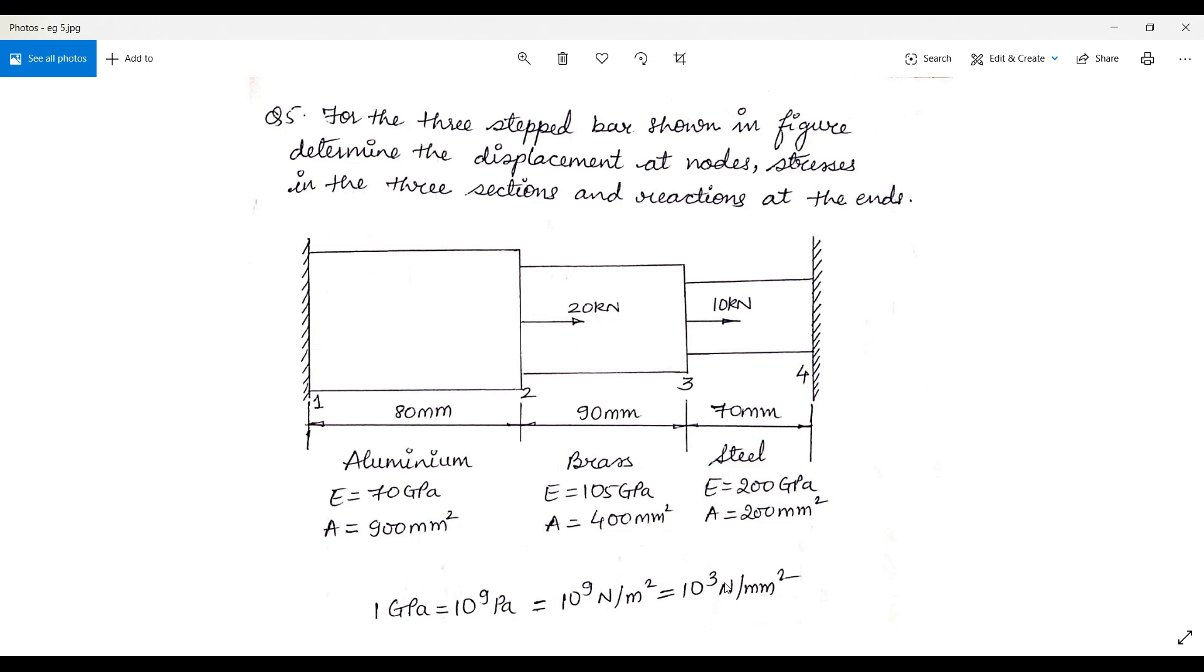This is all about the problem. We will start with the geometry wherein we will make these three step bars first. The area is given as 900, the diameter is not given.